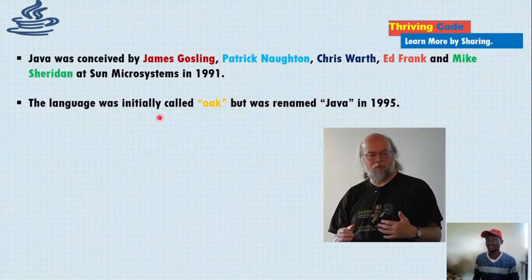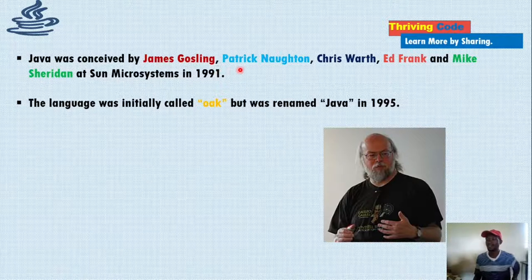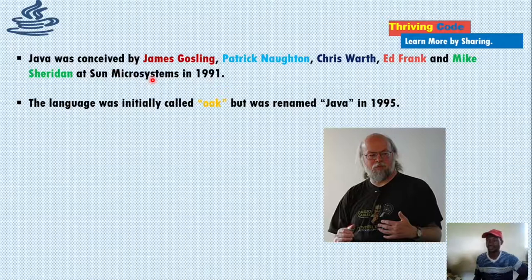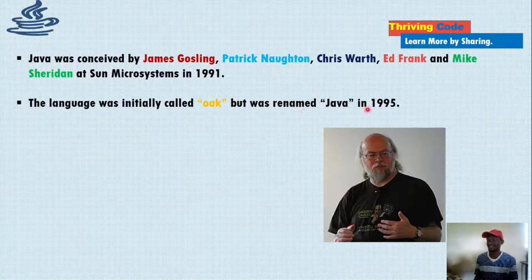Java was invented by James Gosling, Patrick Norton, Chris Wolf, Eddie Frank, and Mike Sheridan. These guys in 1991 were working at Sun Microsystems, which is today called Oracle. The language was initially called Oak, then in 1995 it got renamed to Java.